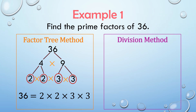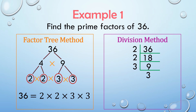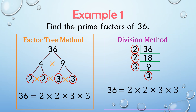Now let's use the division method to find the prime factors of 36. We divide 36 by the smallest prime number, which is 2. 36 divided by 2 is 18. 18 can be divided by the smallest prime number, 2. So 18 divided by 2 is 9. The smallest prime number which 9 is divisible by is 3. So dividing 9 by 3, we have 3. We have arrived at a prime number, so all the factors are now prime. Therefore, the prime factorization of 36 is 2 times 2 times 3 times 3. Any method we use, we will arrive at the same prime factorization.